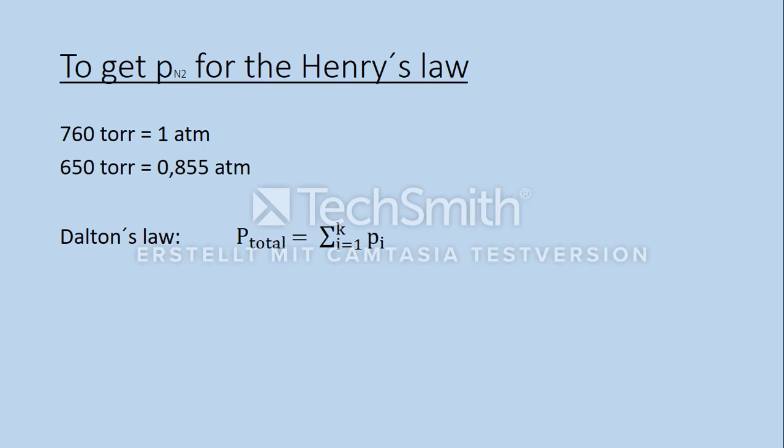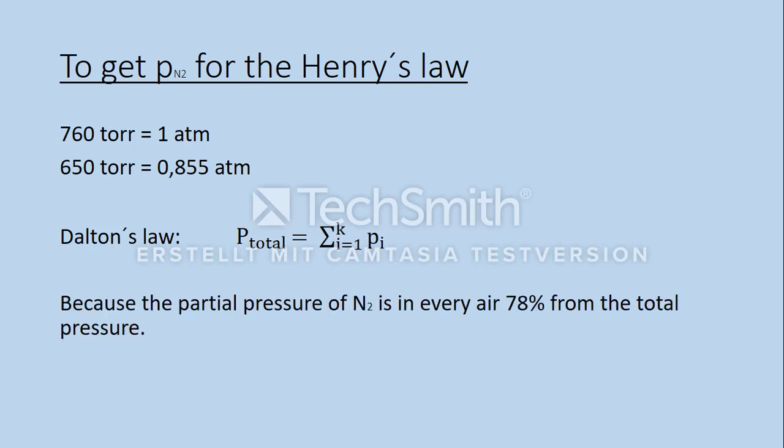After that we can use the conditions of Dalton's law. It says that the sum of all partial pressures resides in the total pressure. The partial pressure of nitrogen in air is always 78% from the total pressure because we have 0.78 atm from nitrogen at a total pressure of 1 atm. To get the partial pressure of the nitrogen over the lake we calculate 78% of 0.855 atm and we get a result of 0.6669 atm for p.